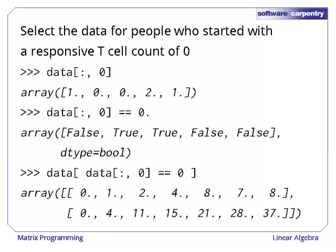we get a Boolean array with true for each row of the array that meets our criteria. If we use this to index the original array, we get the two rows for which the count at time zero is zero.